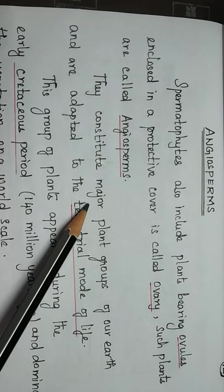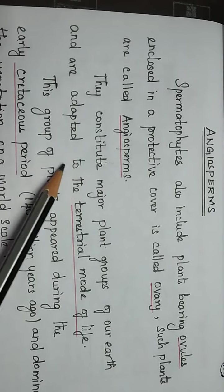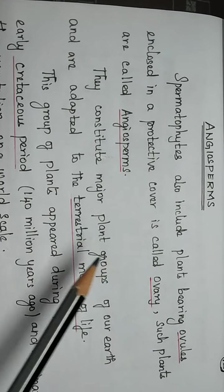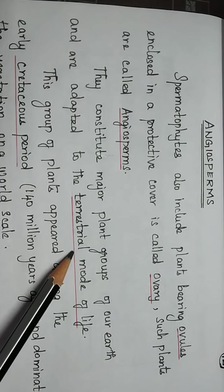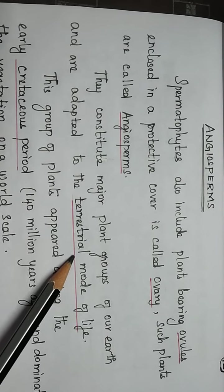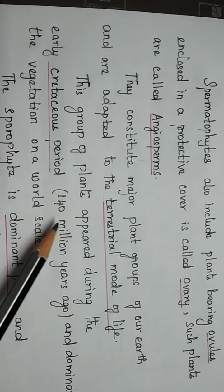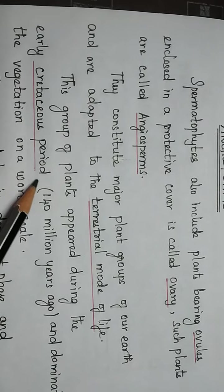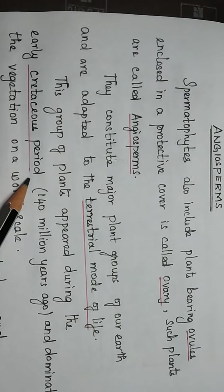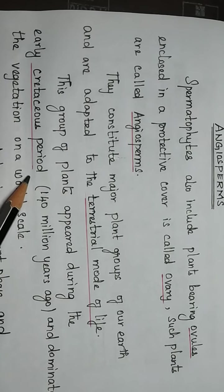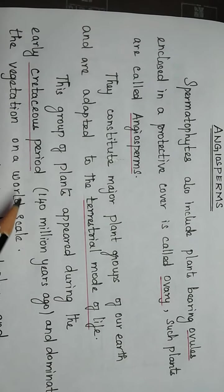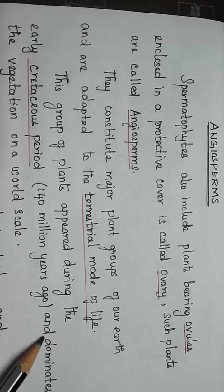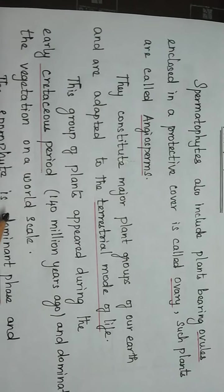Angiosperms constitute major plant groups of our earth and are adapted to terrestrial mode of life. All the angiosperm plants lead a terrestrial mode of life, that means they are land plants. This group of plants appeared during the early Cretaceous period, approximately 140 million years ago, and dominates the vegetation on a world scale.